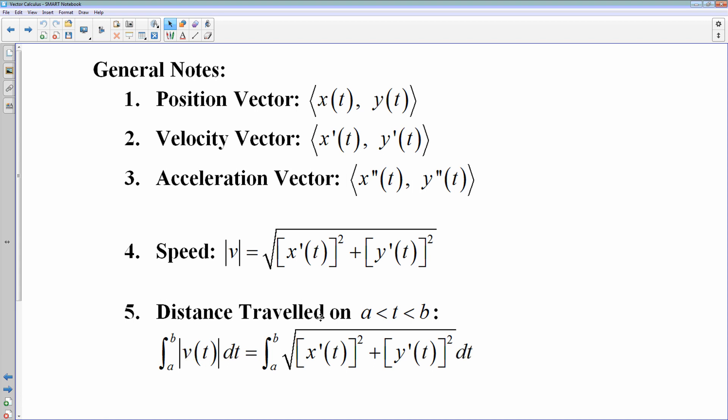And then the distance traveled. The distance traveled is you could either do the area from a to b under the absolute value of the velocity function. This is more for regular function notation. If you are in parametrics, then the distance traveled would be the arc length formula, the length of the curve, which makes sense.